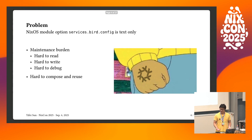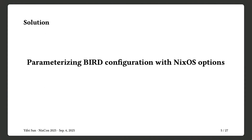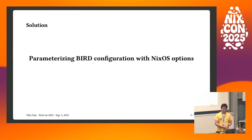What's the problem? The BIRD configuration in the Nexus module is text-only. It's kind of hard to maintain and hard to compose with other services, and it's hard to reuse configurations across different servers. The solution here is to parameterize the text-based configuration with NixOS options.